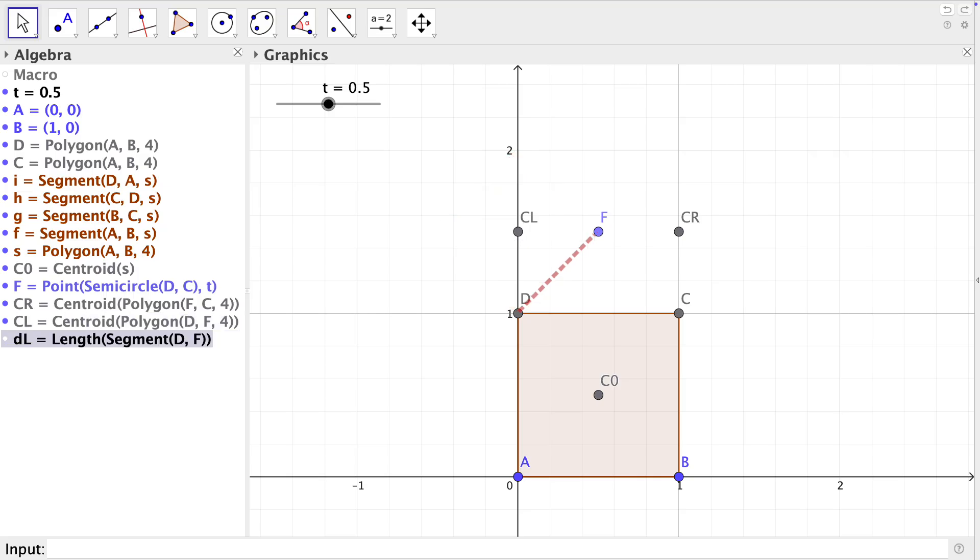Now we define the length DL, which is the length of the side of the left square, the length DR is the length of the side of the right square, and the length of the original square that I named side. We can do this in different ways. Here I use the perimeter command divided by four.